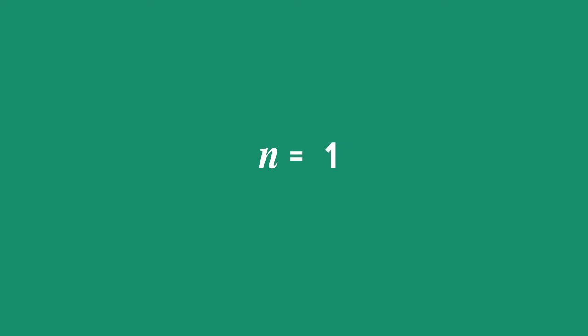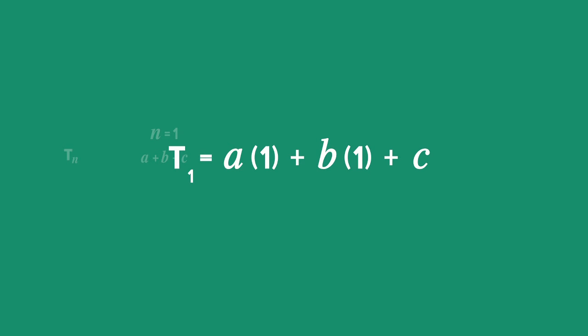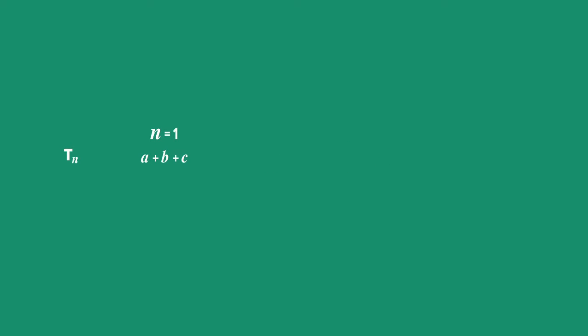If n is equal to 1, we would get the first term and that will have a value of a + b + c. All we've done is replace n with the position number. When n is 2, the second term has the value 4a + 2b + c. And the third term is 9a + 3b + c.